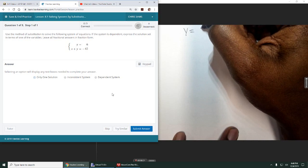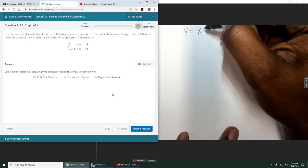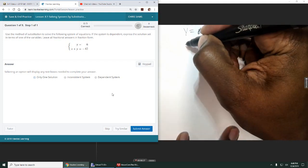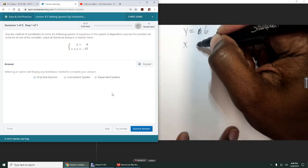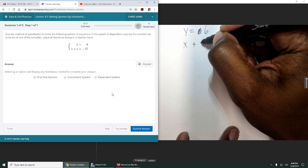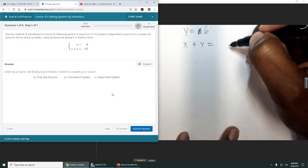Any time you have a y equals or x equals already set up for us, this is y equals 6, then you want to use substitution. We're going to find out if these two lines cross and where they intersect, so we need the x and the y value.